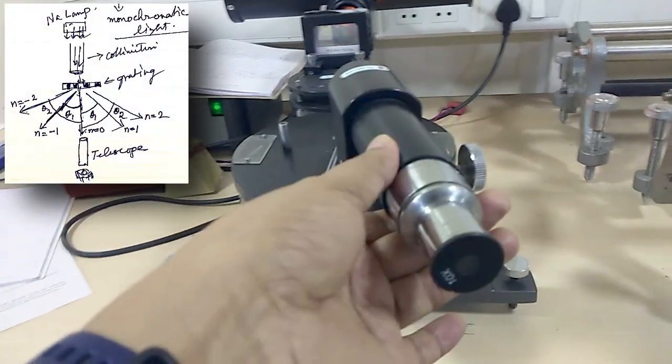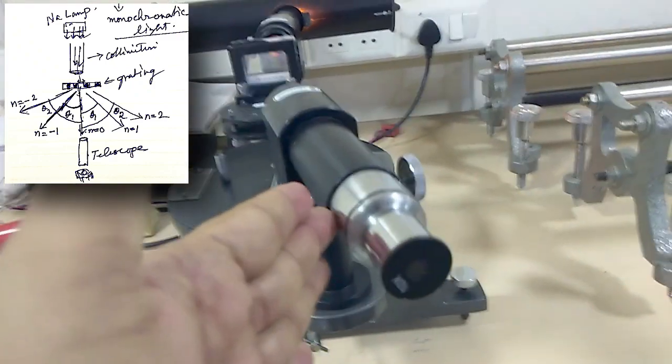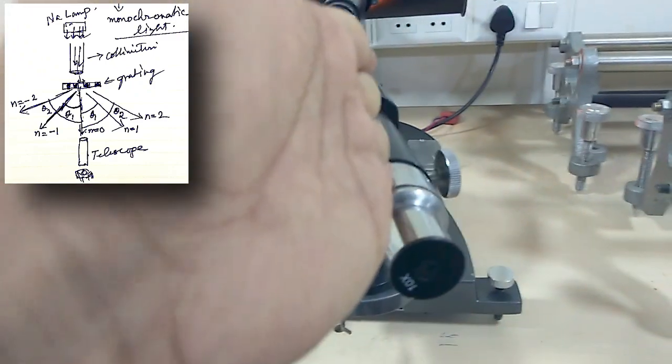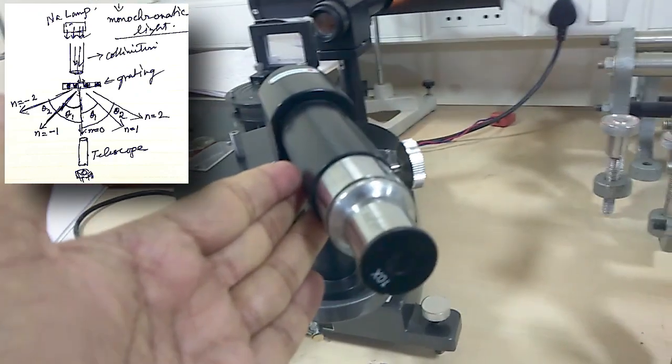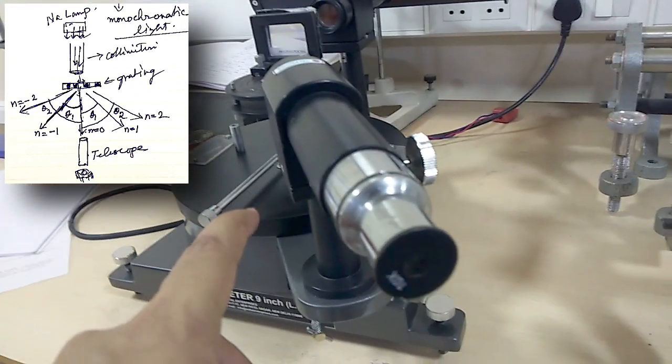So I will measure how much I did the rotation. Then for n is equal to one, then for n is equal to two, I will rotate it further. Then I will record again how much I rotate it.